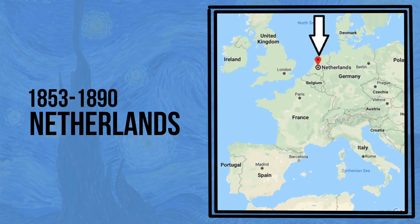Van Gogh was born in 1853 and was a Dutch artist, meaning he was born in the Netherlands.